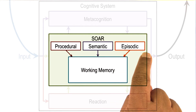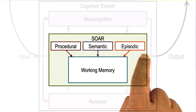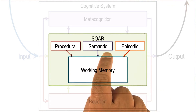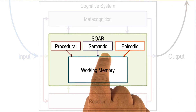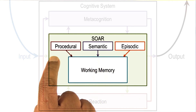Episodic knowledge has to do with events — specific instances of events. For example, what did you have for dinner yesterday? Semantic knowledge has to do with generalizations in the form of concepts and models of the world — for example, your concept of a human being, or your model of how a plane flies in the air. Procedural knowledge has to do with how to do certain things — for example, how do you pour water from a jug into a tumbler?